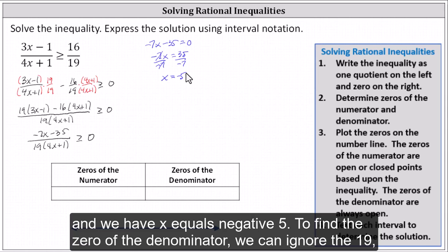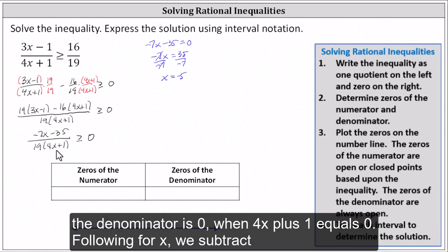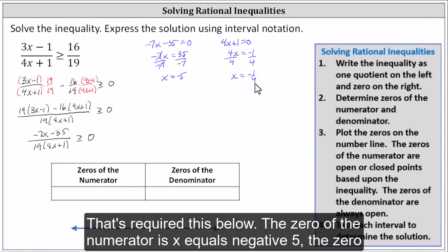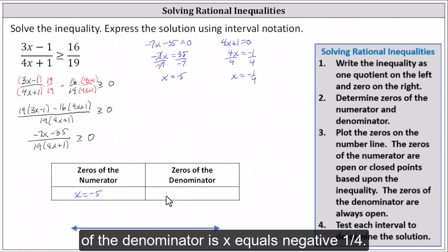To find the zero of the denominator, we can ignore the 19. The denominator is zero when 4x + 1 equals zero. Solving for x, we subtract one on both sides and divide by four, giving us x equals negative one fourth. The zero of the numerator is x = -5, and the zero of the denominator is x = -1/4.